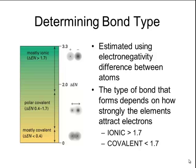The type of bond that forms depends on how strongly those elements attract electrons. In general, anything that is greater than 50% ionic — meaning a difference greater than 1.7 — is considered ionic. Anything that has a difference of less than 1.7 is considered covalent.